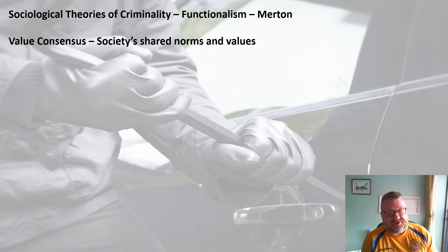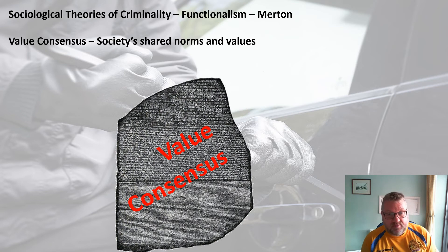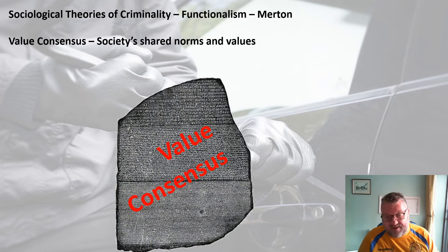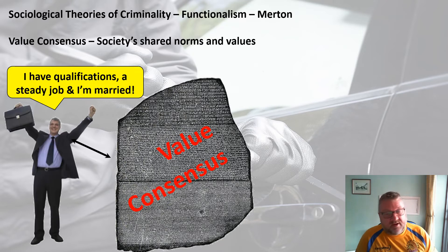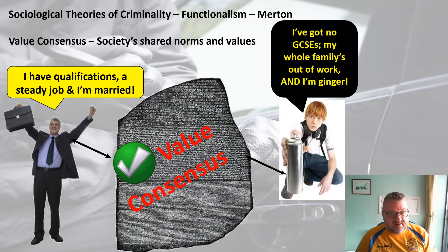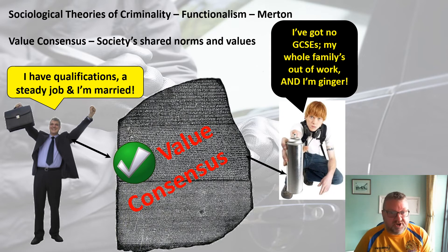To recap: value consensus is society's shared norms and values. As Merton says, some people will buy into that value consensus because they're able to achieve it by legitimate means due to their position in society. For example, someone who says 'I've got qualifications, I've got a steady job, I'm married' is going to buy into the value consensus. Whereas someone without GCSEs whose whole family is out of work might not be buying into the value consensus.